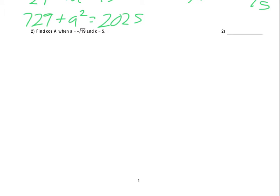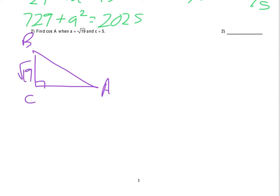Number 2 is a bit similar, although they give us A, which is the square root of 19 — so that's a little bit different. Same basic idea: sketch A, B, C with a 90-degree angle, where A is the square root of 19 and C is 5. Now in order to find the cosine of A, I need the length of B, so again using the Pythagorean theorem to find that.